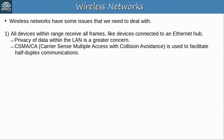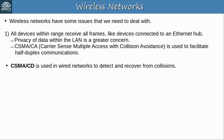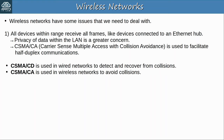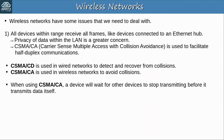Also, to avoid collisions and facilitate half-duplex communications, CSMA/CA, carrier sense multiple access with collision avoidance, is used. CSMA/CD is used in wired networks to detect and recover from collisions. CSMA/CA is used in wireless networks to avoid collisions before they occur. Basically, when using CSMA/CA, a device will wait for other devices to stop transmitting before it transmits data itself.